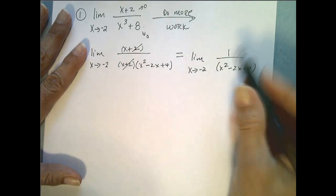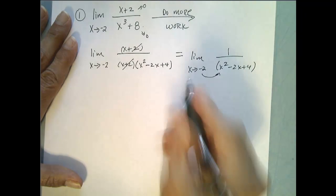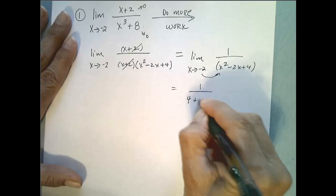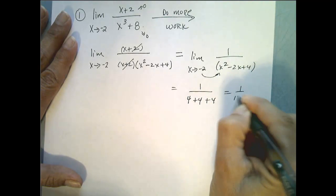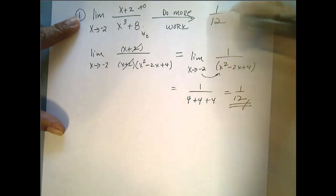Now we check to see if direct substitution works. So if I plug negative 2 in for x now, I get, well the top is 1, the bottom is 4 plus 4 plus 4 or 1 twelfth. And so this limit is equal to 1 twelfth.